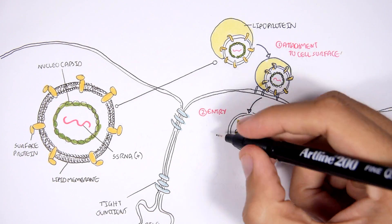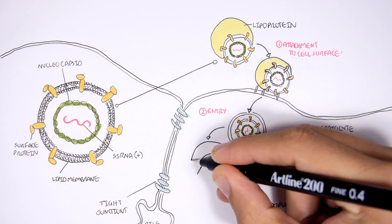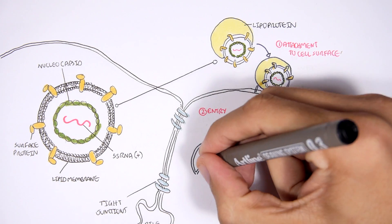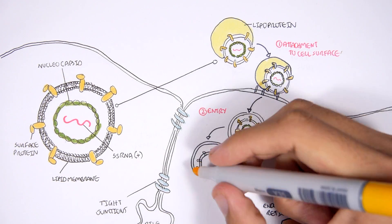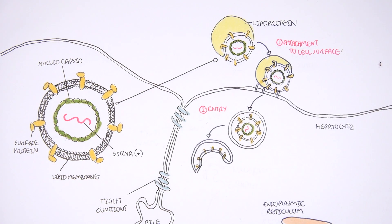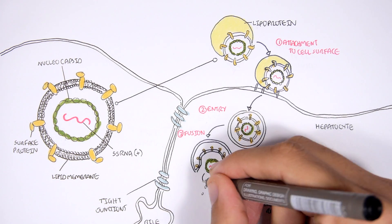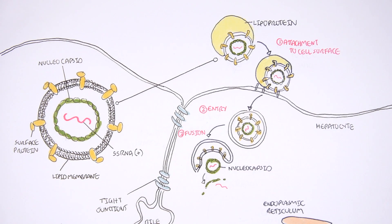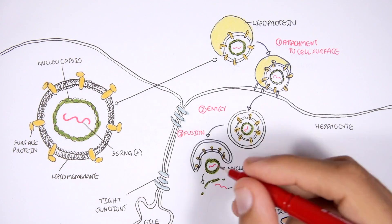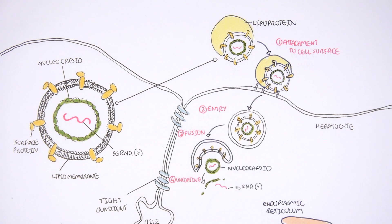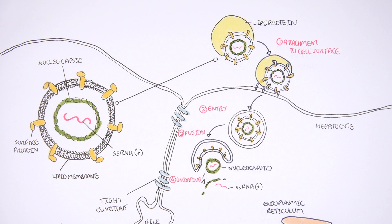Next, the viral envelope — the virus's lipid membrane — will fuse with the endosome, a process known as fusion. This will result in the release of the nucleocapsid into the cytoplasm of the liver cell. The nucleocapsid will then uncoat, releasing the hepatitis C virus genetic material, which is the positive single-stranded RNA, or positive sense RNA.